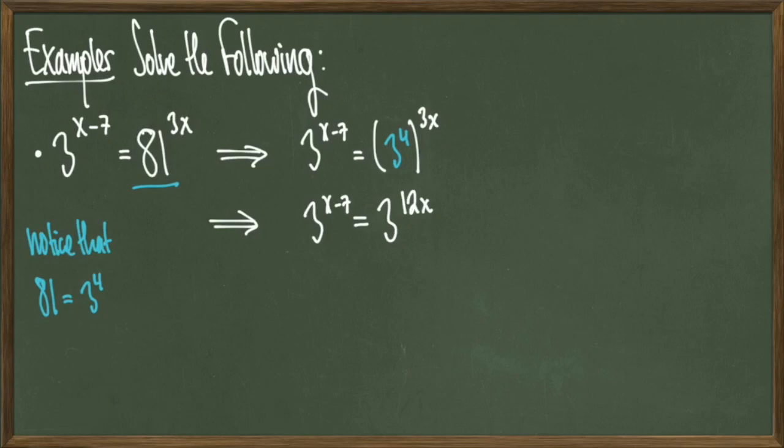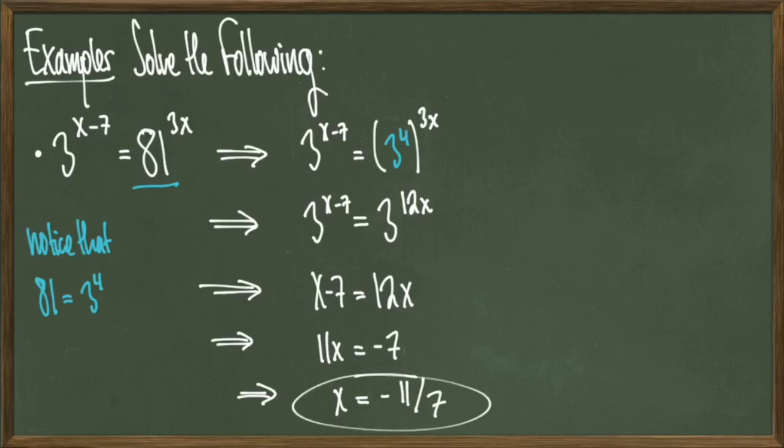Now that our bases are alike, we can set x minus 7 equal to 12x, and when we solve, we get a final answer of x equals negative 11 over 7, and we're done.